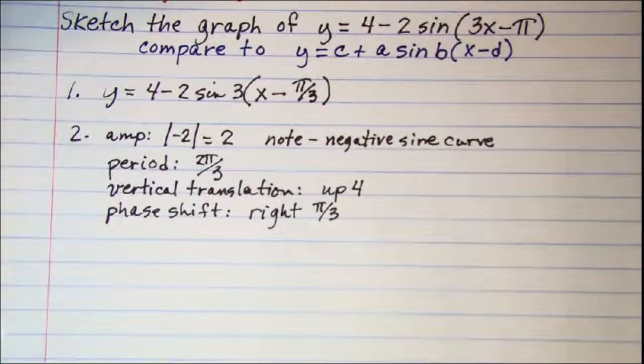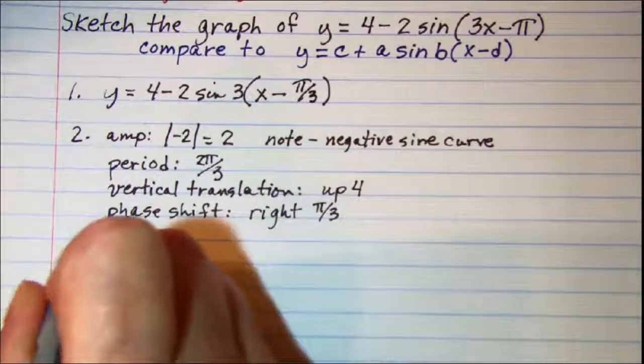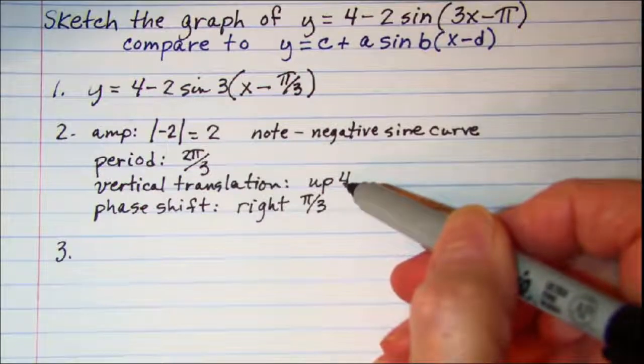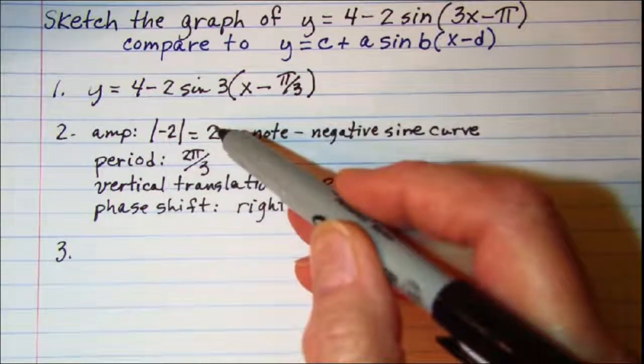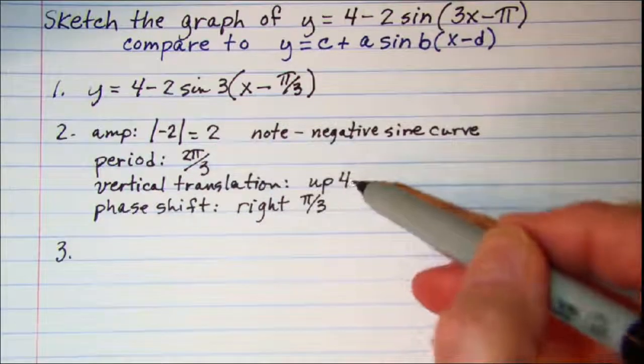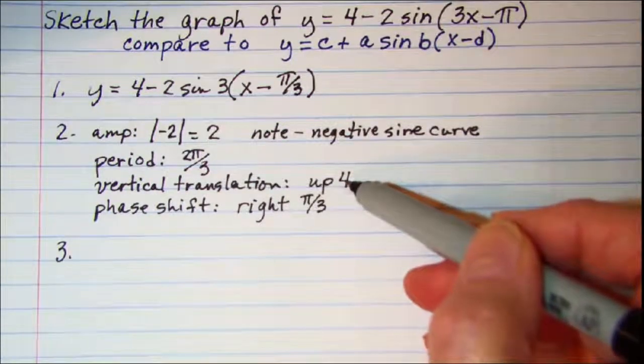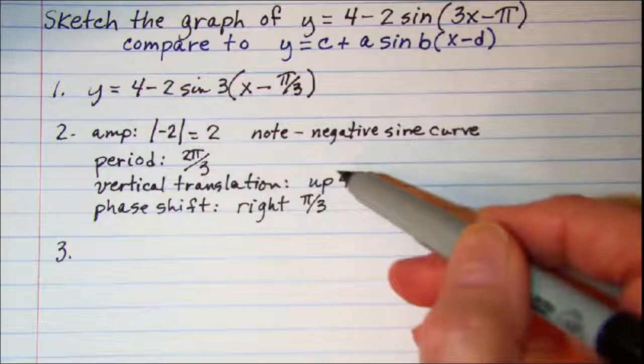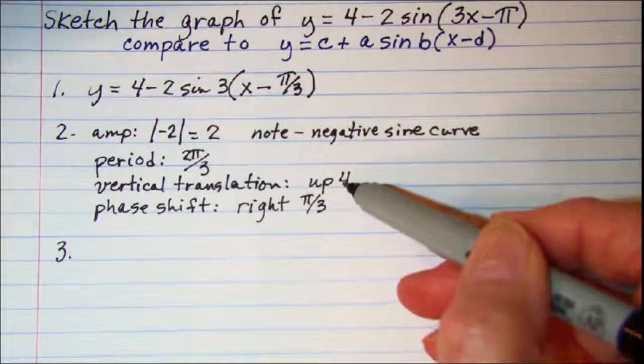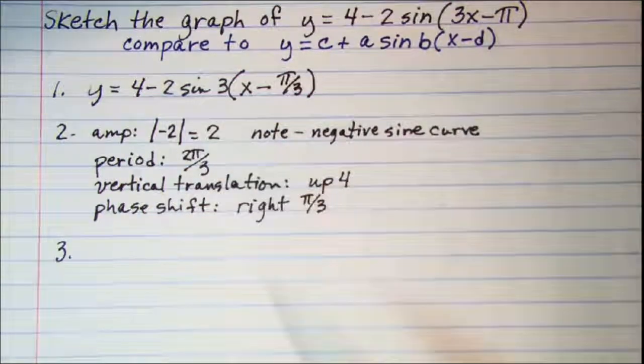Our next step is to draw the guidelines. Since we're doing a vertical translation up 4 and I have an amplitude of 2, that means my max is going to be at 6, which is 4 plus 2, and my min is going to be at 2, which is 4 minus 2.